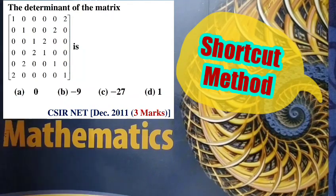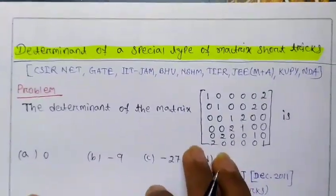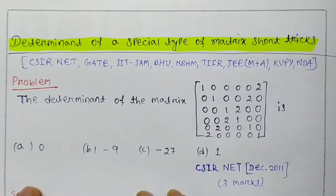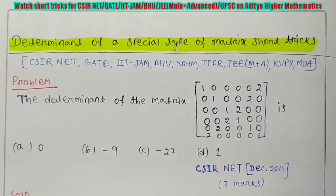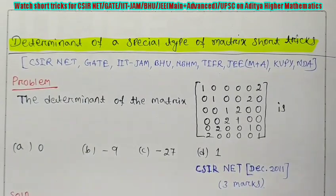Okay, now I will solve that problem. There are some special kind of matrices whose determinant we can find out easily using shortcut methods.